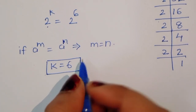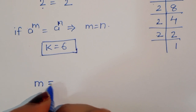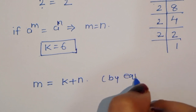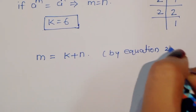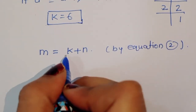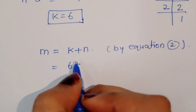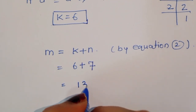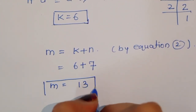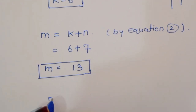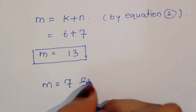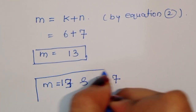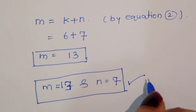Now we find the value of m. We know m equals k plus n by equation 2. Substituting the values: k is 6 and n is 7, so m equals 6 plus 7 equals 13. Therefore, m is equal to 13 and n is equal to 7. This is the solution. Thank you.